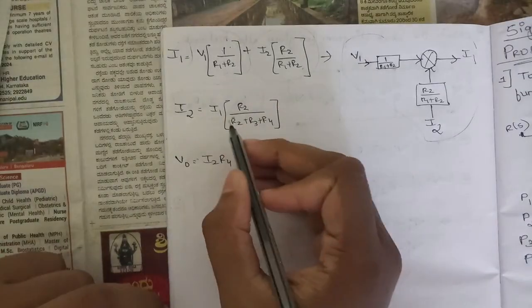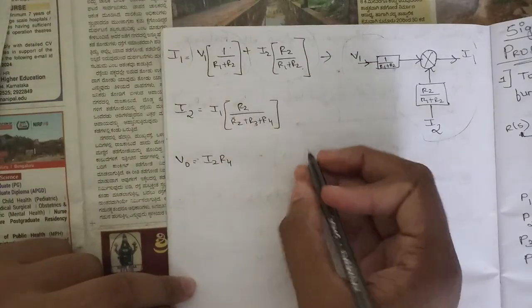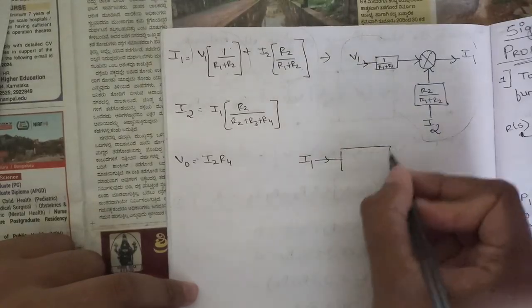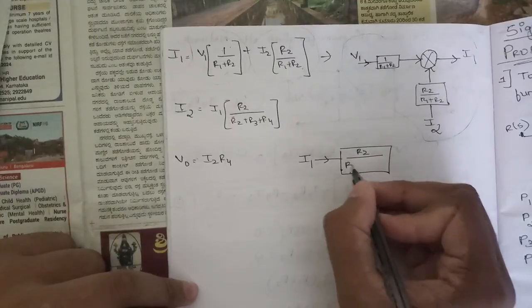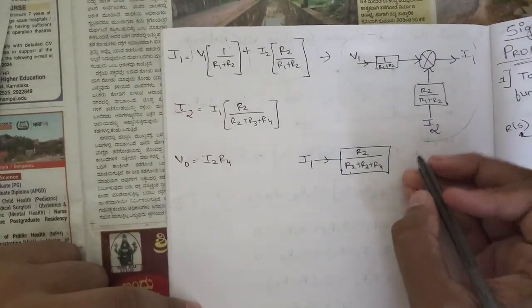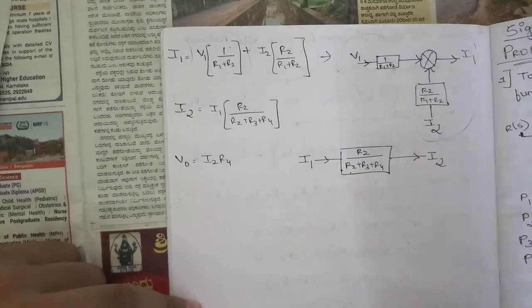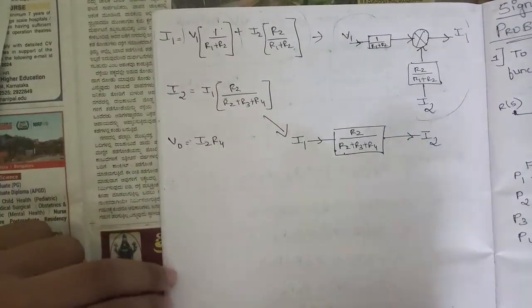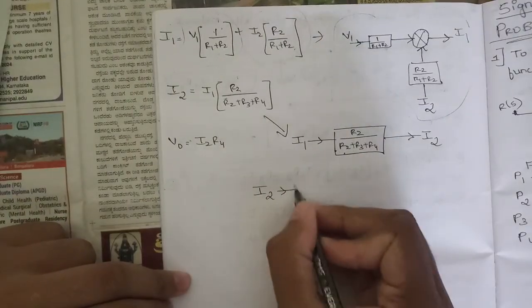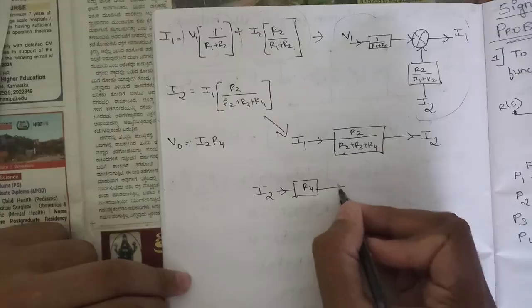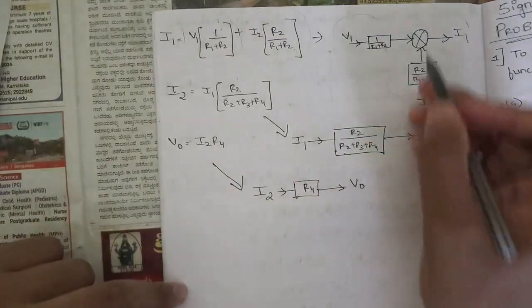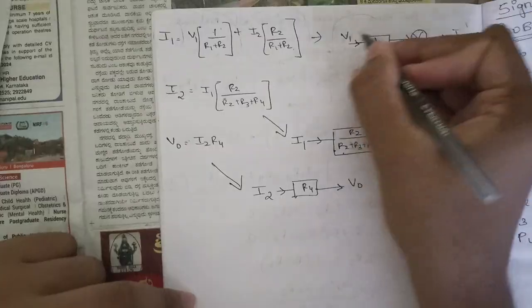Similarly for I2: write I1 going into the feedback block [R2/(R2+R3+R4)], and the result is I2. For the third equation, V_out = I2·R4 — write I2 going into block R4, and the resultant is V_out. So these are the three individual block diagrams.